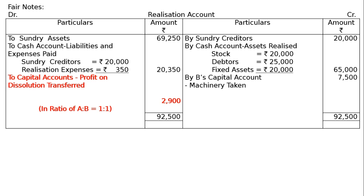A's share is Rs. 2,900 multiplied by 1/2 = Rs. 1,450, and B's share is Rs. 2,900 multiplied by 1/2 = Rs. 1,450.